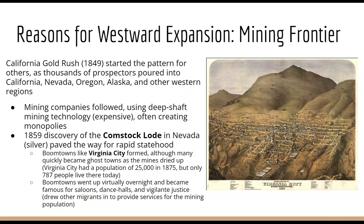These cities often became ghost towns when the mines dried up. You can actually see an image of Virginia City, which is built right into the hills where the mines are. In 1875, there were 25,000 people living in Virginia City, which is a really large number. Today, only 787 people live there. A lot of these little towns dried up into ghost towns once the mines went bust.